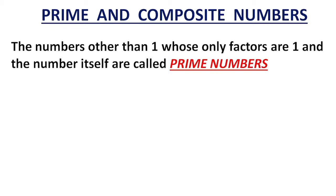Next, the number 3. 1 times 3 is 3, so in the 1's table and 3's table only we can find 3. But take 4: 1 times 4 is 4 and 2 times 2 is 4. That means in the 1's, 2's, and 4's tables we can find 4, so 4 has 3 factors: 1, 2, and 4. The numbers other than 1 whose only factors are 1 and the number itself are called prime numbers. That means 2 and 3 are prime numbers and 4 is not a prime number.